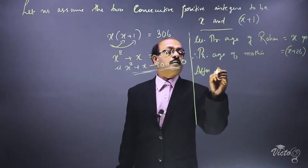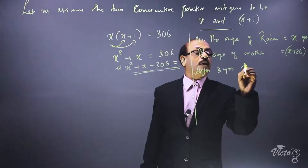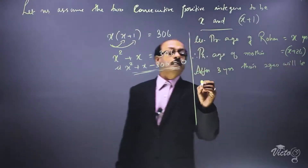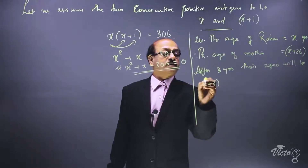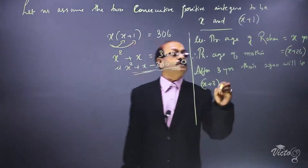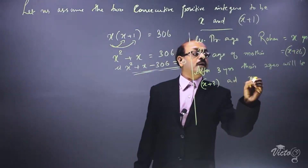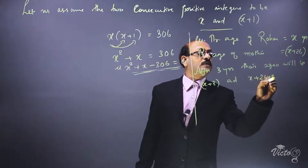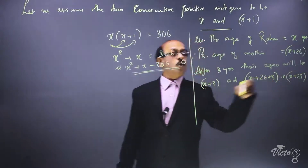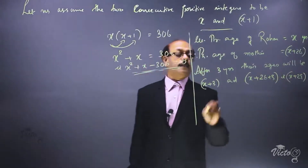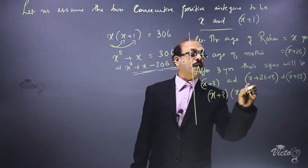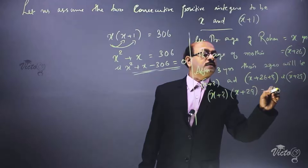After three years their ages will be: the age of Rohan will be x plus 3, and the age of mother will be x plus 26 plus 3, that is x plus 29. The product of these two ages is given as 360, so x plus 3 into x plus 29 is equal to 360.